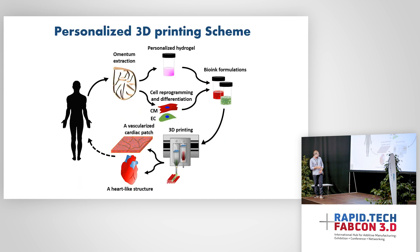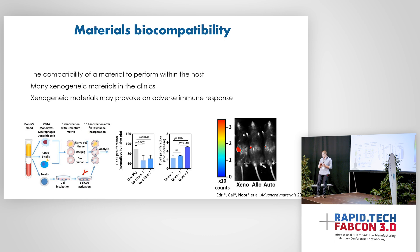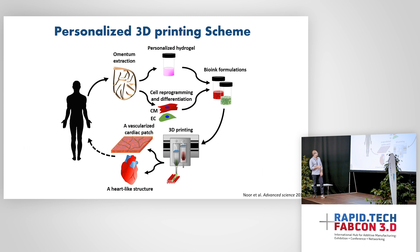Last year, we showed that using materials and cells from the patient itself is much preferable to using synthetic or animal-derived materials. We showed this both by simulating an immune response in the lab and by implanting these tissues in rats. All of which showed us that using materials and cells from the patient itself will be much preferable and won't be rejected. So in my research, we printed heart patches — and as a proof of concept, even whole hearts — using the patient's own materials and cells.